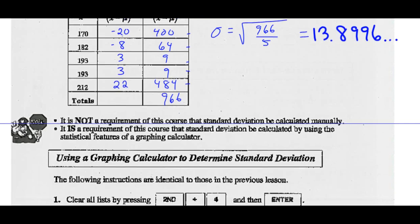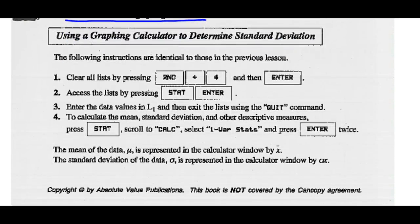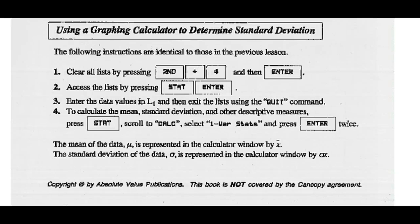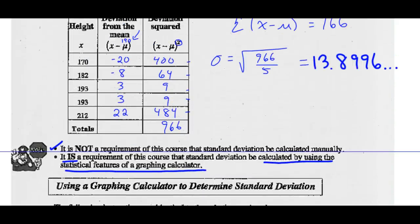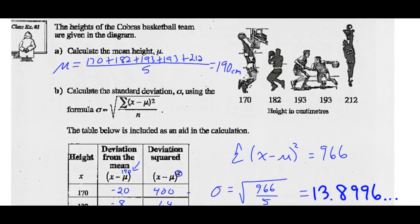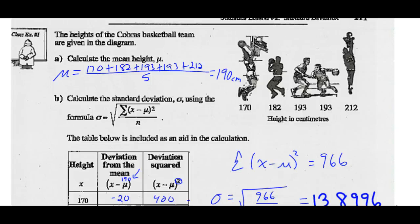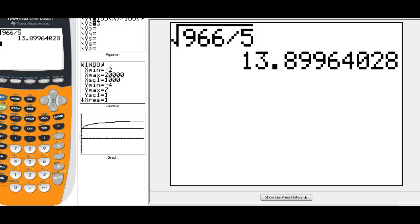Note: it is not a requirement of this course that the standard deviation be calculated manually like we just did. We don't ever have to do that again. However, it is a requirement that the standard deviation be calculated using the statistical features of the graphing calculator. Here are the procedures to do that. Let's do that with our calculator for this data. All we need is the data — you can follow along in your book.